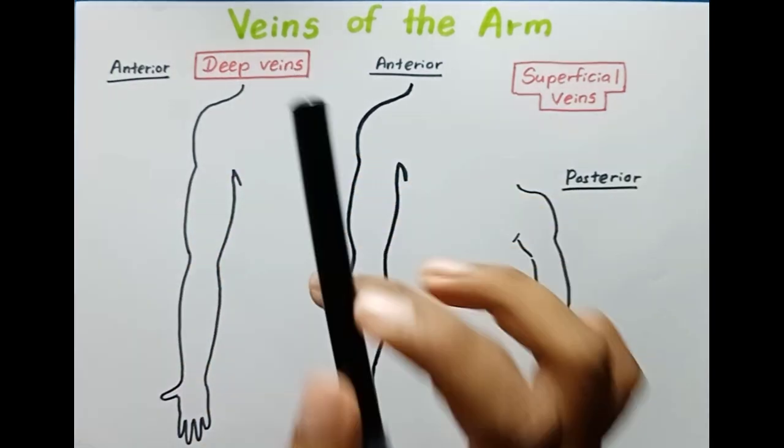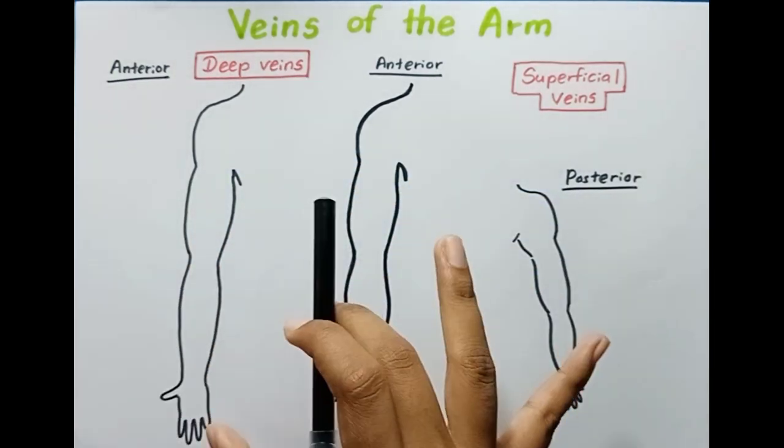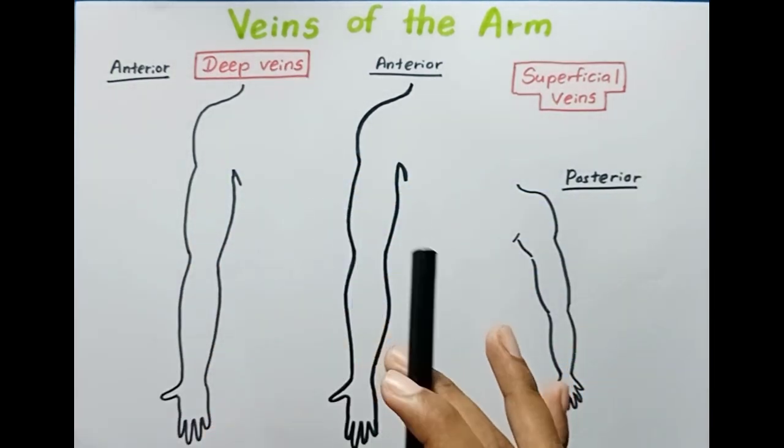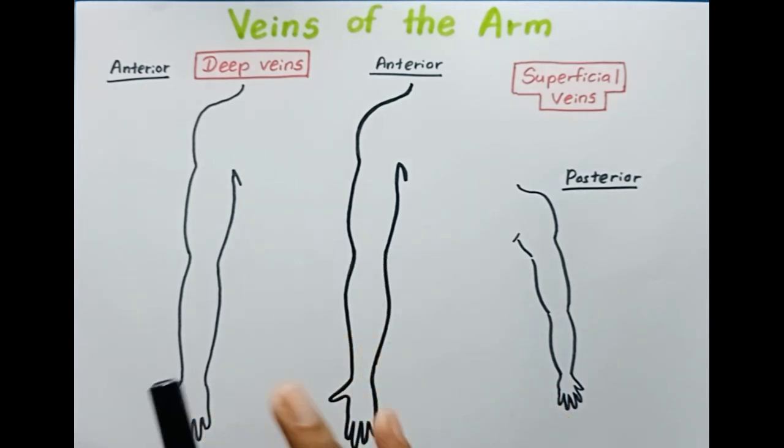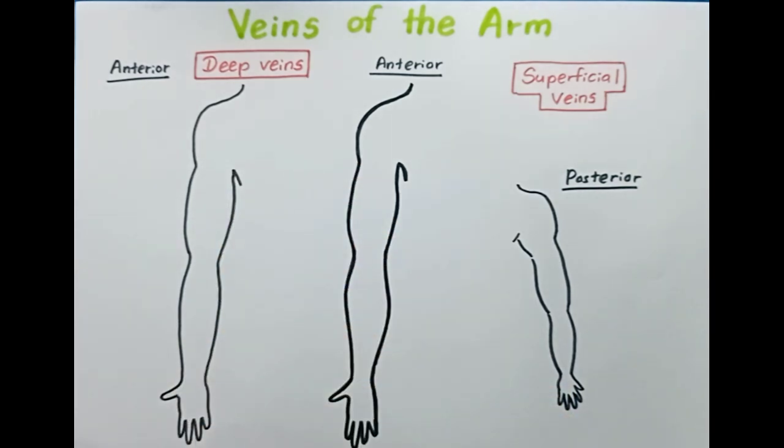Deep veins follow the arteries, and two veins accompany each artery up to the armpit.